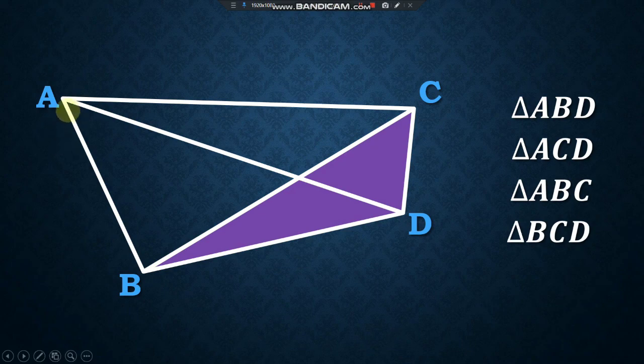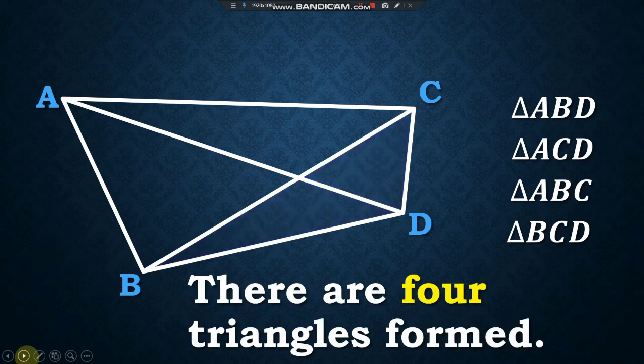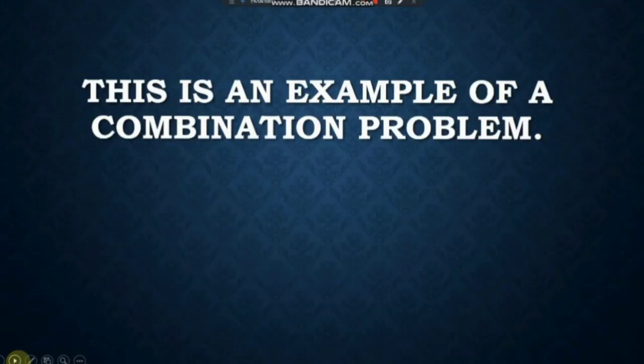How many triangles are there? There are four triangles formed. This is actually an example of a combination problem.